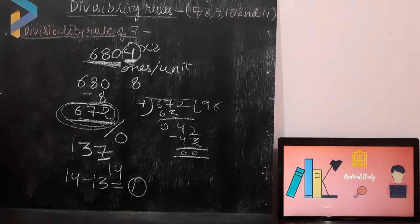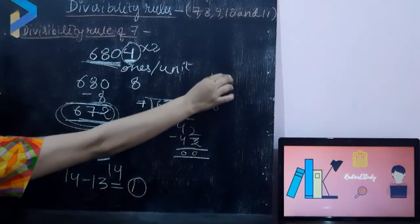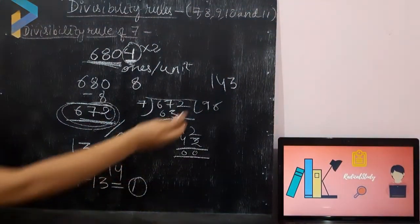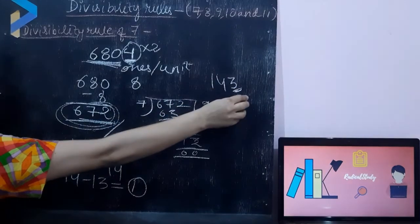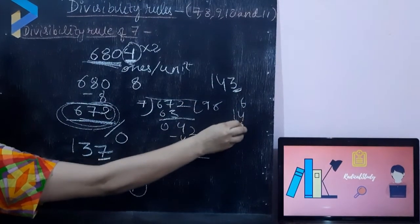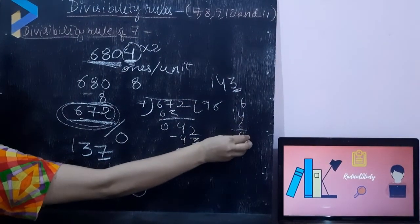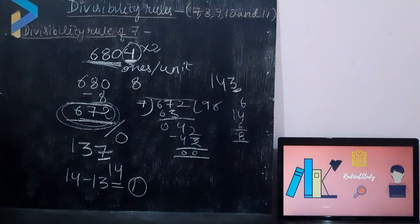Now I am going to take one more example. We have to check it. Double the unit digit — it will be 6. Now 14 minus 6 is 8. This is also not divisible by 7. So this is how we check the numbers.